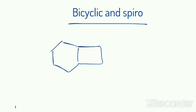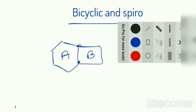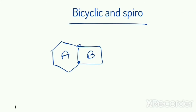Today we are going to learn Bicyclic and Spiro compound nomenclature according to the IUPAC system. So what is a Bicyclic compound? Look at the picture. There is a 6-membered ring A and a 4-membered ring B joined together by 2 carbon atoms. These 2 carbon atoms are known as BHC — Bridge Headed Carbon.